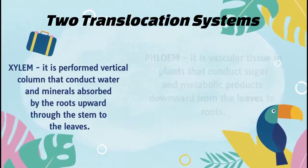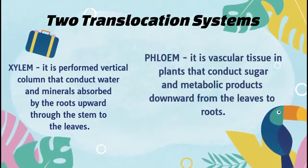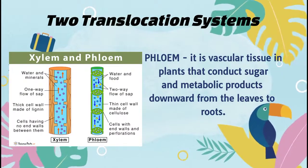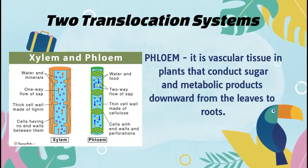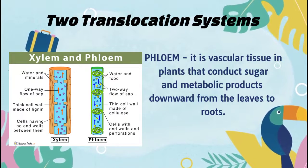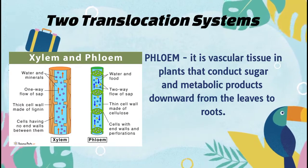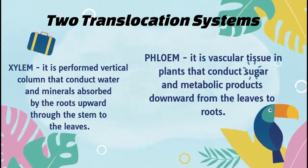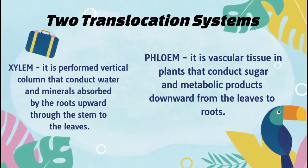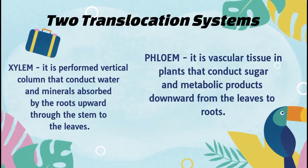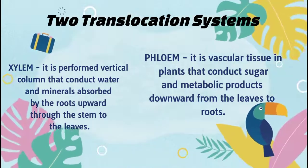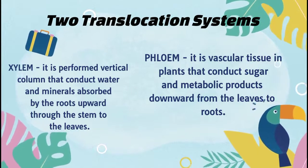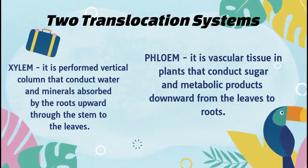Second, the phloem. It is the vascular tissue in plants that conducts sugar and other metabolic products downward from the leaves to the roots. Also, through the phloem, it can transport organic compounds made during photosynthesis, known as photosynthates. The upward movement from leaves to fruit organs also occurs.